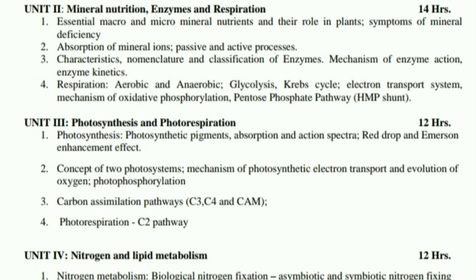Photosynthesis converts solar energy into chemical energy using carbon dioxide and water. The process involves photosynthetic electron transport. Fourth topic — carbon assimilation pathways and photorespiration, C2 pathway.